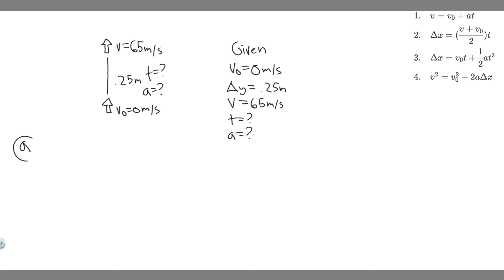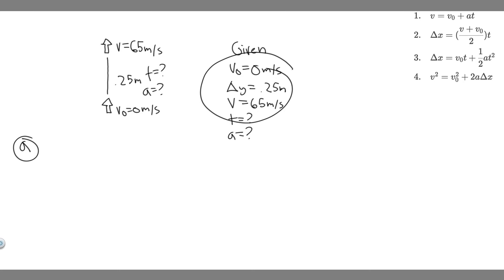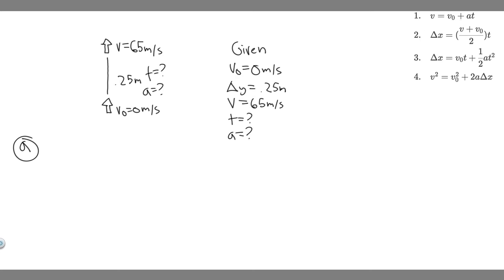Let's start with Part A. We're trying to find how long the acceleration lasted, so we're solving for T. We do this by using one of the kinematic equations. We look at the variables we have and solve for the remaining one. We have V₀, we have delta Y, and we have V. Looking at equation number 2 — delta X equals (V₀ + V) divided by 2, times T — notice delta X and delta Y are interchangeable. We have final velocity, initial velocity, and delta Y, so the only variable left is T.